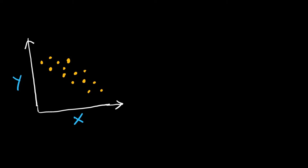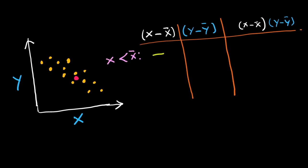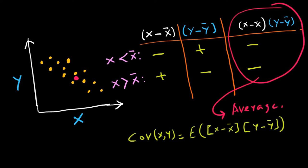As X increases, Y decreases almost linearly. Suppose the red dot is the mean. When X is less than x-bar, x minus x-bar is negative but y minus y-bar is positive, so their product is negative. This may not be true for every data point, but for the majority it will be. When X is greater than x-bar, x minus x-bar is positive but y minus y-bar is negative, so that product is also negative. For covariance we calculate the average of these products, therefore the sign of the covariance in this dataset will be negative.